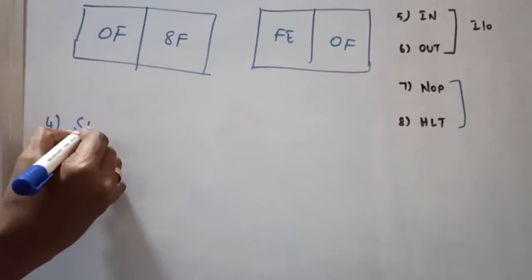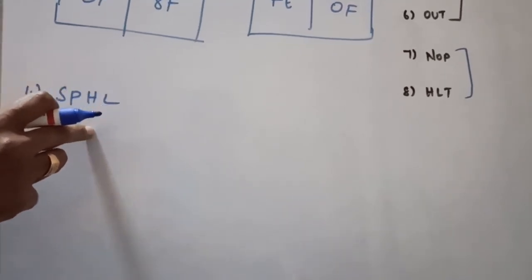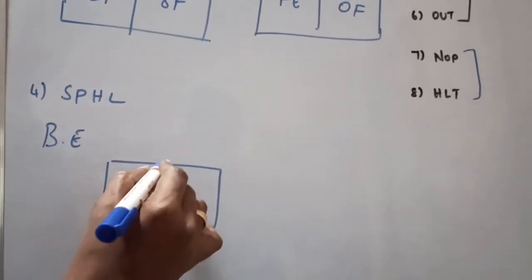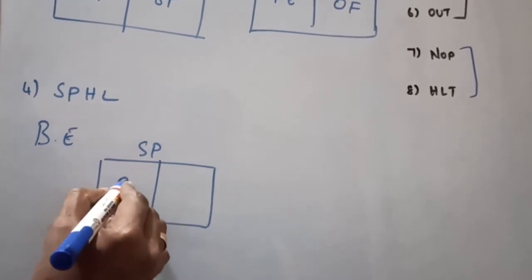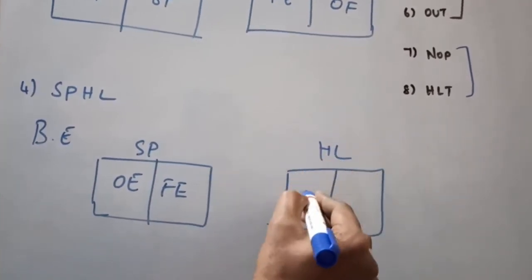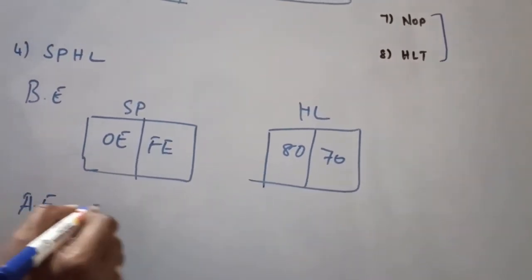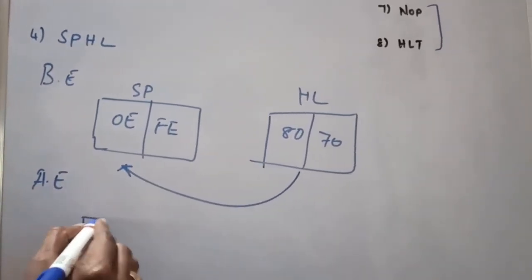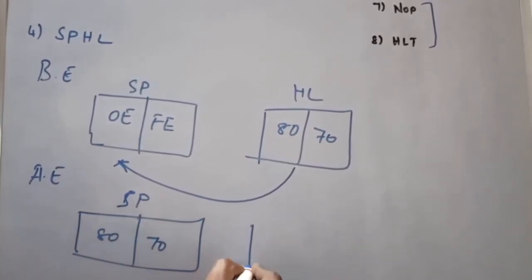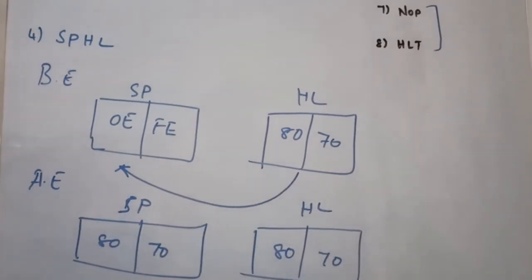The fourth instruction is SPHL. Whatever content is present in the HL pair is transferred to the stack pointer. Before execution, the stack pointer holds a 16-bit value and the HL pair holds 8070. After execution, the stack pointer becomes 8070. The HL pair also retains 8070 because the value is copied, not cut.